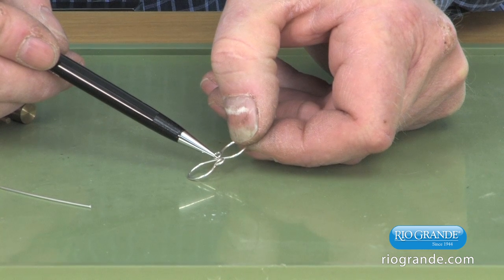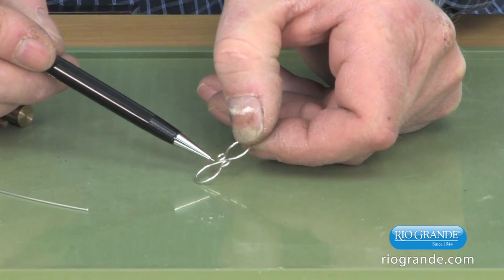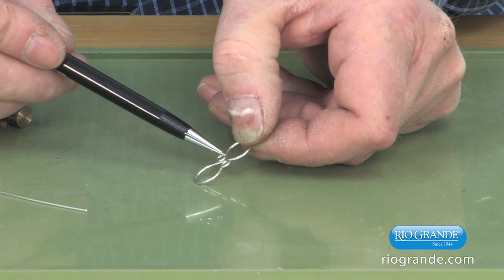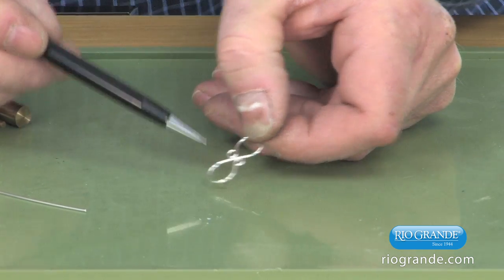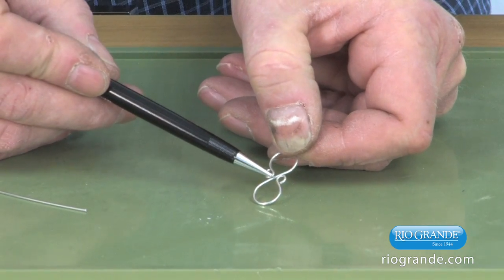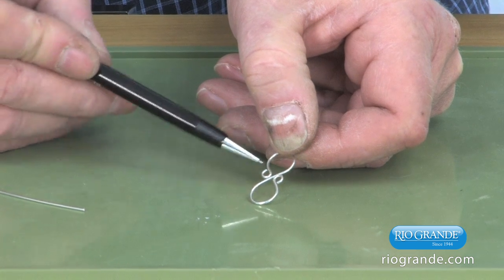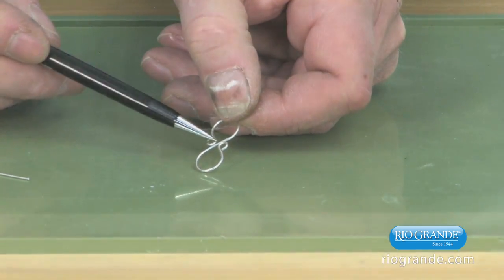And then I also hard soldered them to the middle member of the S-hook. So there's a solder joint here, here, and in the center.